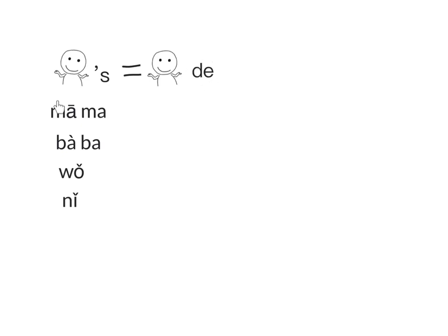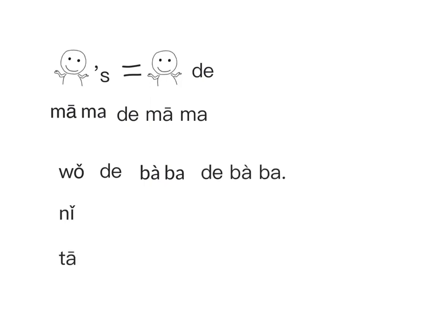For example, 'Mama's mom' — how would you say? 妈妈的妈妈. How about 'my papa'? We say 我的爸爸. How about 'my papa's papa'? We say 我的爸爸的爸爸. Here, two 的 for two layers.